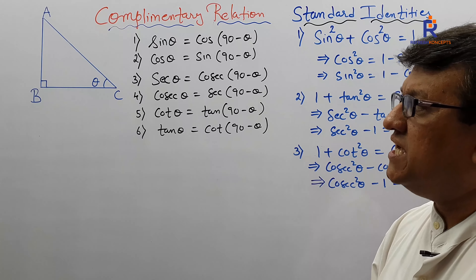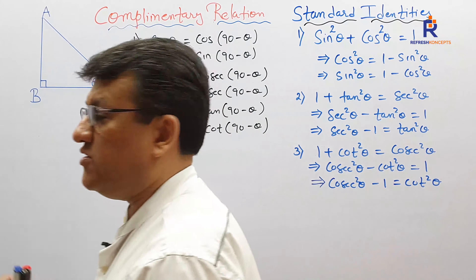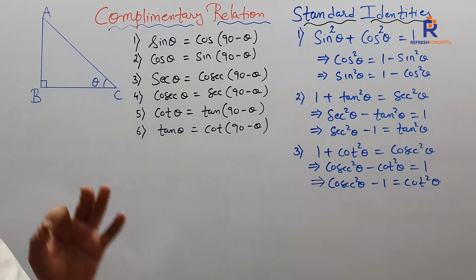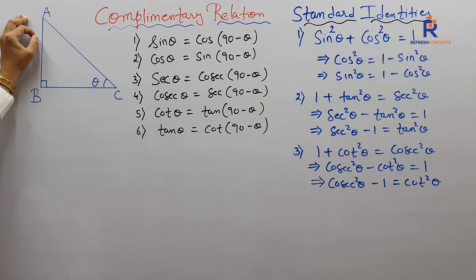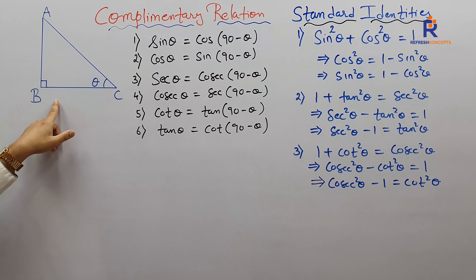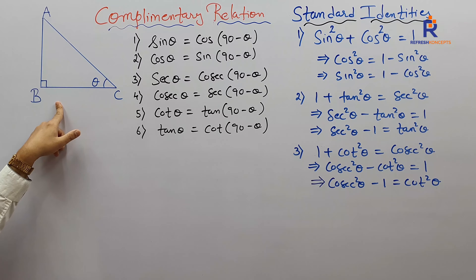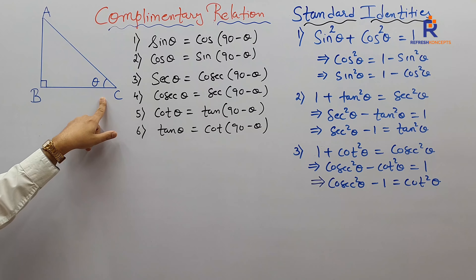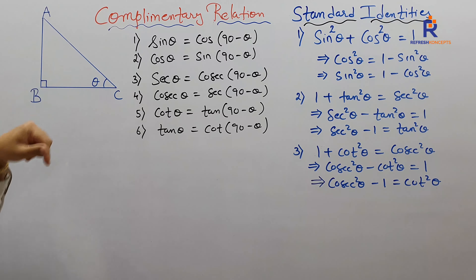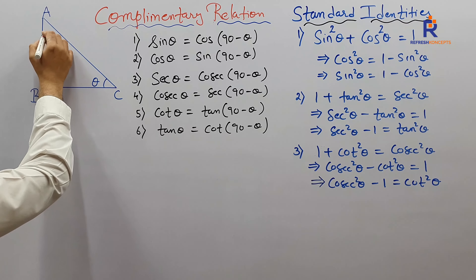First, complementary relations. As I stated in my previous video, this particular figure is the all-important figure. So let's once again start with the same triangle ABC — it's a right angle triangle. We are restricting ourselves to right angle triangles only. In right angle triangle ABC, angle B is 90 degrees and angle C we have named theta. So what shall angle A be?